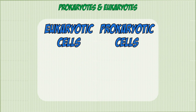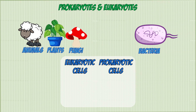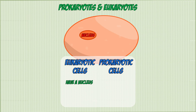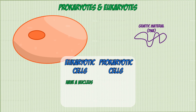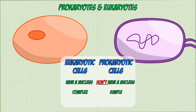Eukaryotes are organisms such as animals, plants and fungi, whereas prokaryotes can be unicellular organisms such as bacteria. The main difference between the two is how their genetic material is stored. Eukaryotes have cells which store all their genetic material in a structure known as a nucleus, whereas prokaryotic cells don't have a nucleus. Instead, their genetic material floats around in the cell. Eukaryotic cells are also more complex than prokaryotic cells and are much larger in size.